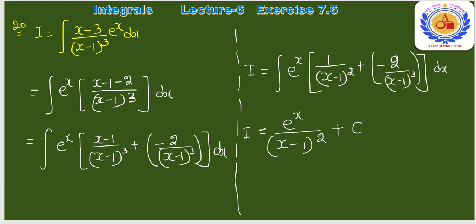Separate: [(x−1) − 2]/(x−1)³ = 1/(x−1)² − 2/(x−1)³। यह eˣ·[f(x) + f'(x)] form है जहाँ f(x) = 1/(x−1)²।